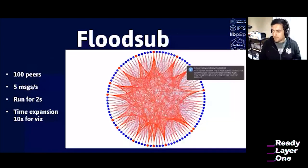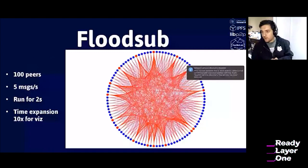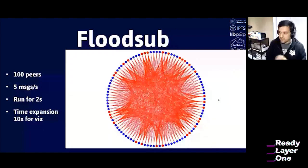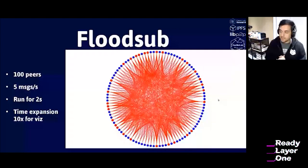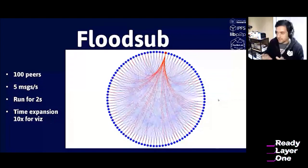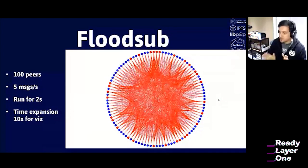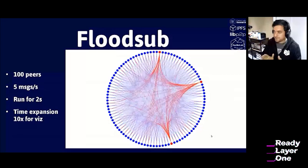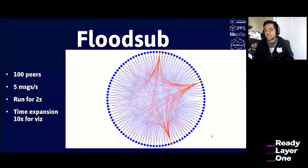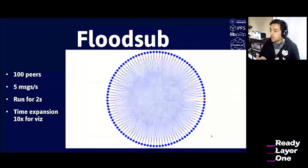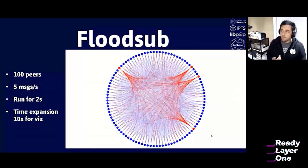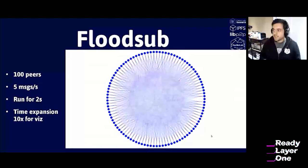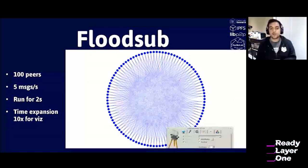FloodSub is very simple to implement and very robust, so it's very hard to attack and very hard to miss a message since everyone in the network is just sending messages to each other, giving us the property of minimum latency — the router doesn't pick any latency path, it just picks all the paths, so one of them must be the minimum. But the problem is it's really bandwidth inefficient. In a simulation of 100 peers with five messages per second, we can see a lot of chatter in the network. But we have to remember that we are always limited in bandwidth, and once we start abusing available bandwidth, we might start choking ourselves.